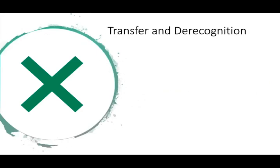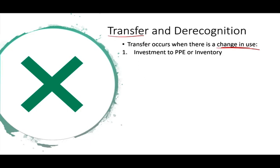Transfer and derecognition. Transfer is when you take an investment property and convert it to property, plant and equipment, or vice versa. The transfer occurs when there is a change in use — the purpose changes. For example, you had a warehouse you were renting out as investment property, and then you decided to use that warehouse to store your own goods. That warehouse becomes property, plant and equipment. Or you decide to buy and sell warehouses, in which case it becomes inventory.